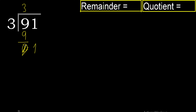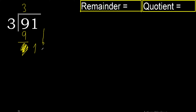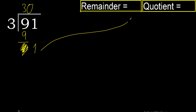Bring down the 1, eliminating the 0. 1 is less than 3, therefore complete — but there is no number that goes down, so we finish. We complete here with 0. The remainder is 1.